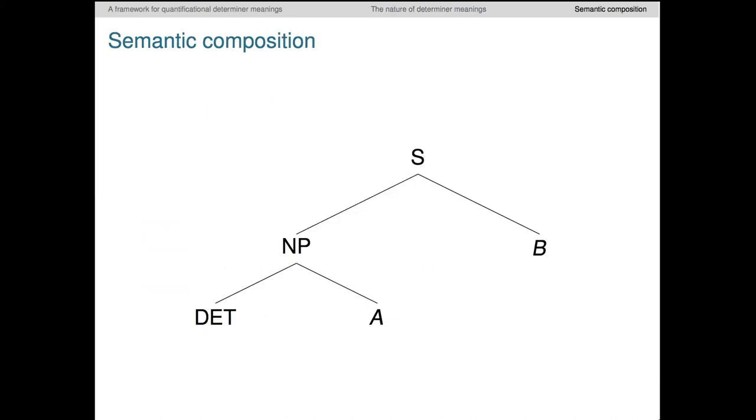As always, we want to know how these meanings interact with other meanings to produce new meanings. That is, we're interested in semantic composition. A bit later in the term, we'll develop a logical grammar to handle these aspects of the phenomena, but the underlying process is easy to capture. Here, I have a simple syntactic structure for the sentence DET A's or B's. More intuitively, here's every student danced. For the semantics, we swap in the meanings, which are sets of various kinds of objects.